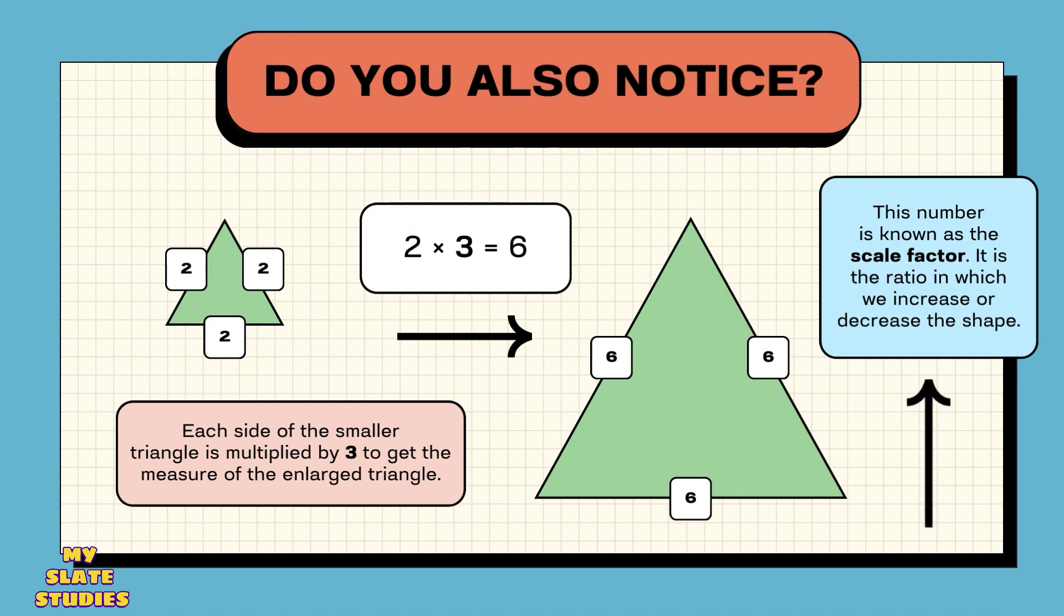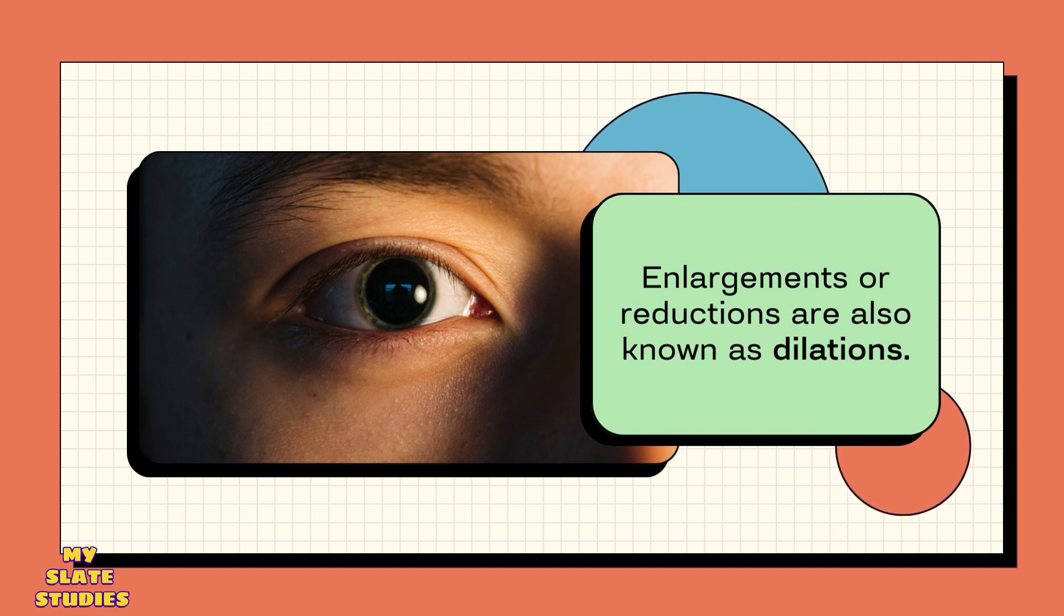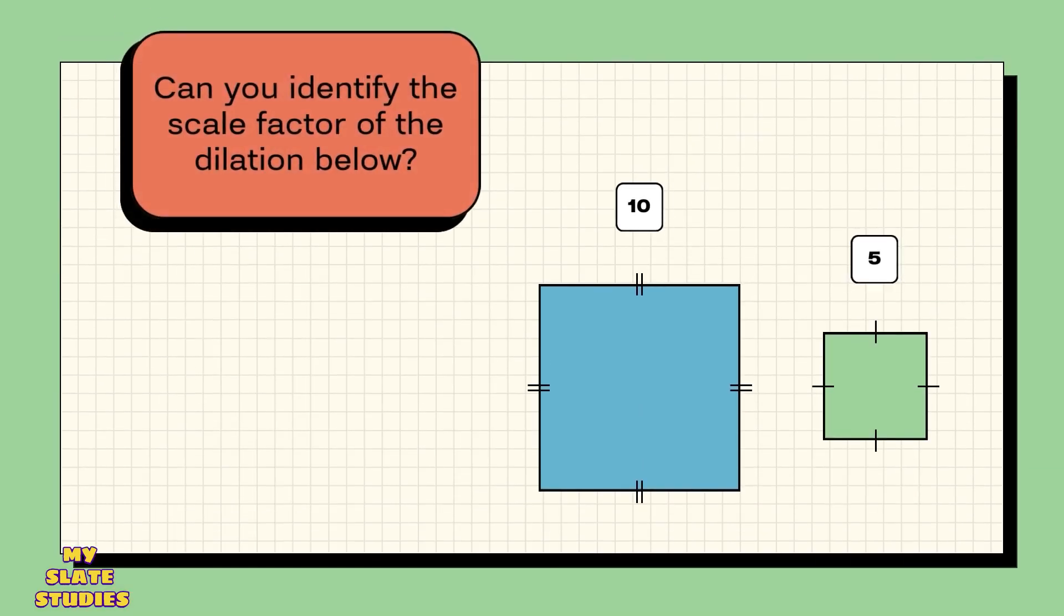which serves as the point about which the figure will be dilated. 3. Measure the distance from the center of dilation to each point of the figure. 4. Multiply each distance by the scale factor to obtain the corresponding new distances.